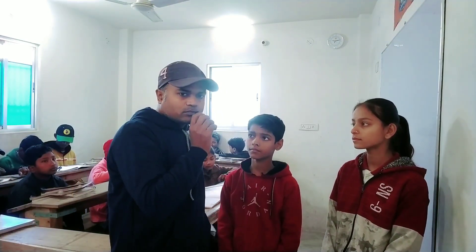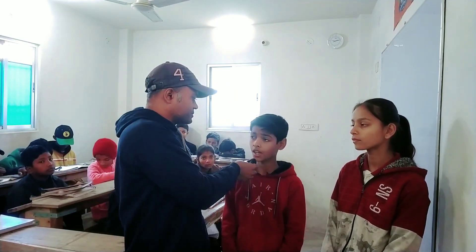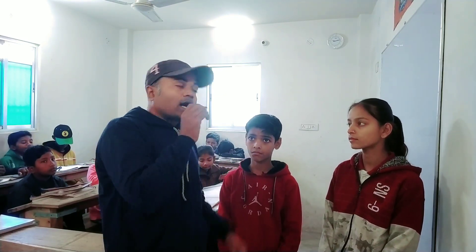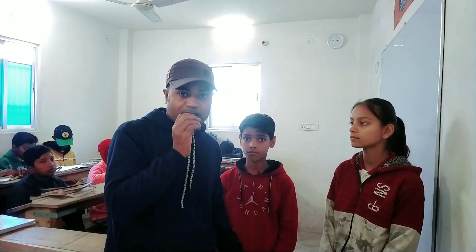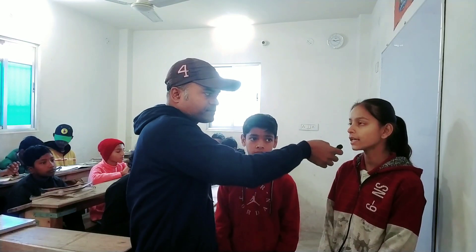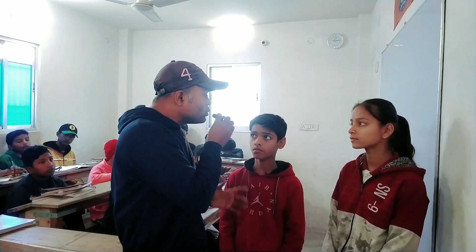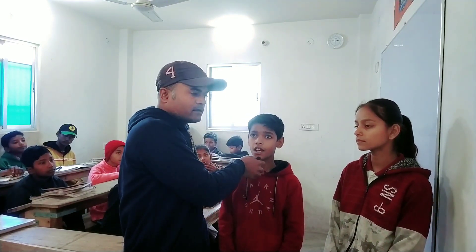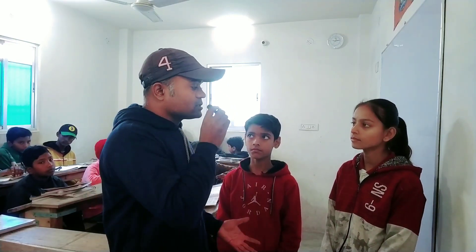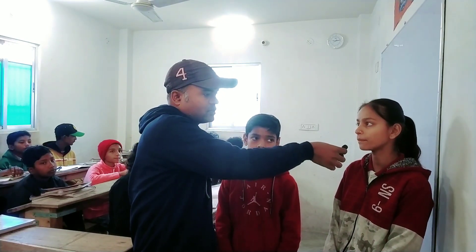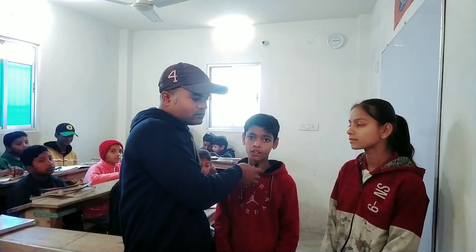Kya tumhaare paas panch rupay hai — Do I have five rupees? Mere paas toh ek rupay nahi hai — I have no money. Kal mere paas paisa tha — I had money yesterday. Uske paas ghar tha — He had a home. Ab uske paas ghar nahi hai — Now he doesn't have a home. Kal uske paas panch [bikes] tha — Yesterday he had five; today he has none. He had no [bikes], or he did not have any.